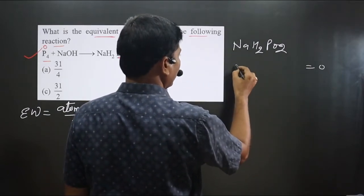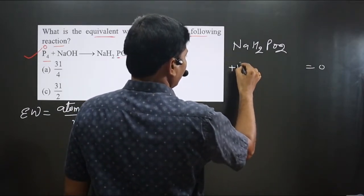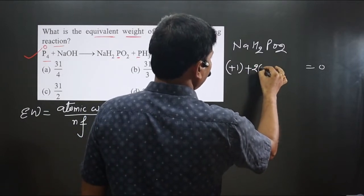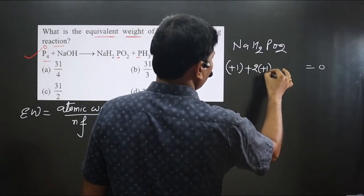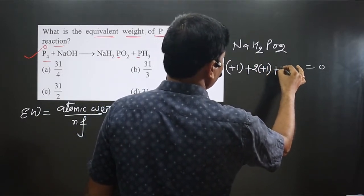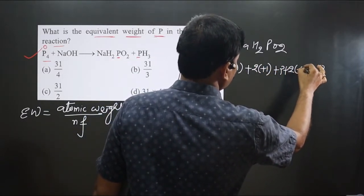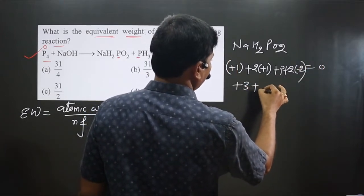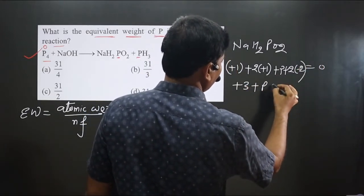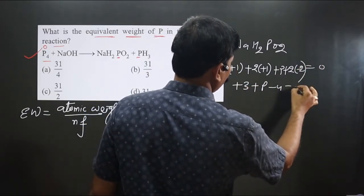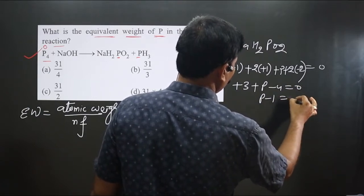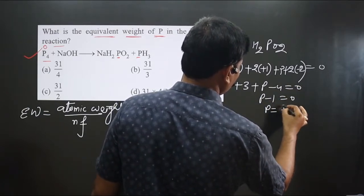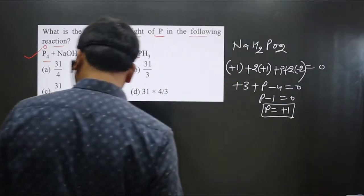To calculate the oxidation number in NaH₂PO₂: the molecule is neutral (= 0). Sodium is +1, two hydrogens each at +1, phosphorus unknown, and two oxygens each at −2. So: 1 + 2 + P + 2(−2) = 0, giving P − 1 = 0, so phosphorus is +1.